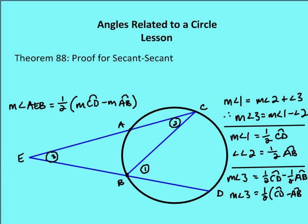Drawing this in pen to help visualize: arc CD is the intercepted arc for angle one, so the measure of angle one is one-half the measure of arc CD. The measure of angle two is one-half the measure of intercepted arc AB. Therefore, the measure of angle three equals one-half CD minus one-half AB, which gives us the measure of angle three equals one-half the measure of CD minus AB. That completes the proof.